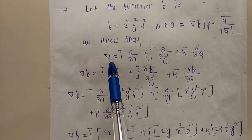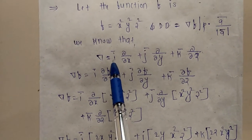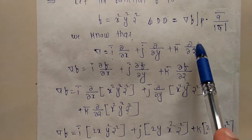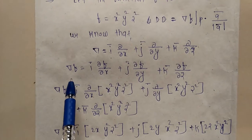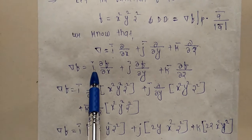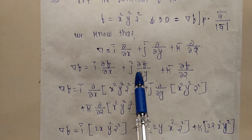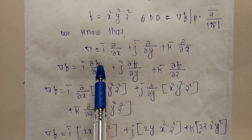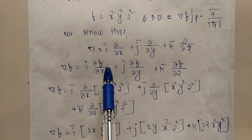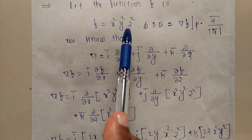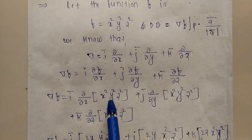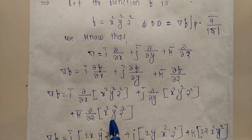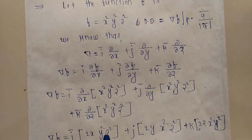We already know that del (∇) = i(∂/∂x) + j(∂/∂y) + k(∂/∂z). So ∇f = i(∂f/∂x) + j(∂f/∂y) + k(∂f/∂z). The value of f is given as f = x²y²z². We substitute this value of f into each partial derivative term.